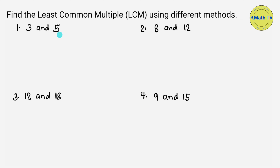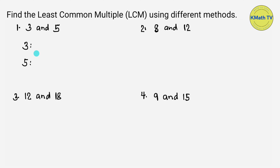For the first problem, let's use the listing method to find the least common multiple or LCM of 3 and 5. In the listing method, we will list the multiples of the given numbers until we find a number that is a common multiple. By using skip counting, we can list the multiples of the numbers.